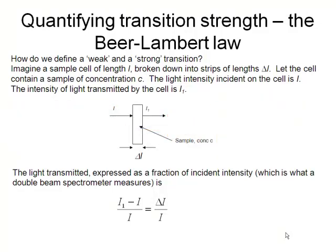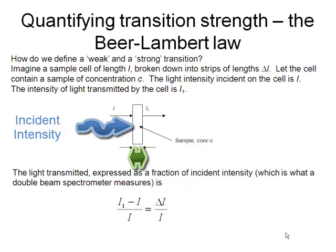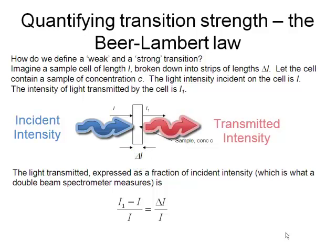So we're going to derive the Beer-Lambert law. There's our sample, which has got some light coming in from the left. It's hitting our sample, and then we've broken our sample up into lots of thin strips of length delta L. The light that's transmitted has intensity I minus, and the length of that cell is delta L.